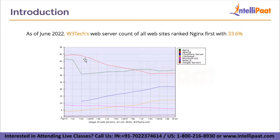This graph is pulled from a website called W3Tech, which is an extensive and reliable web technology survey website. It has surveys ranging from most popular server-side languages to most popular JavaScript libraries — basically anything related to web technology. What they say is that the count of all websites using Nginx was 33.6%, so Nginx has a share of 33.6% of all websites on the World Wide Web, followed by Apache, then Cloudflare Server, LightSpeed, and other web servers.